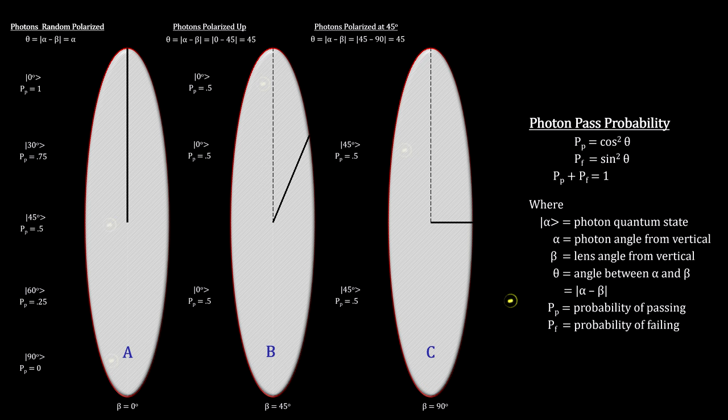The key takeaway here is that objects like lenses, crystals, electric fields, etc. can and do modify the quantum states of the particles that encounter them.